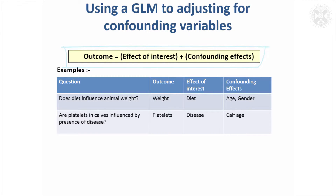For example, if you were looking at the influence of diet on animal weight, the effect of interest is diet, so that would be fitted as a factor in the model. But if you've got animals with different ages and different genders, that's going to very much affect weight, and unless they're completely balanced between the two diet groups, it might bias your results.